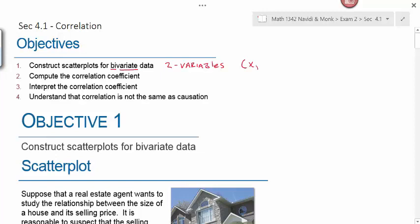We typically refer to these variables as x and y and represent them as an ordered pair. On our calculators we're going to put the x's in list one, the y's in list two. We're also going to compute a correlation coefficient, interpret it, and understand that correlation is not the same as causation.